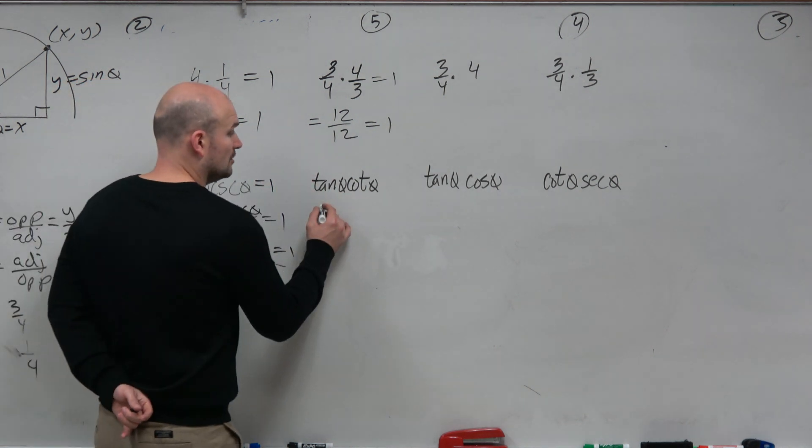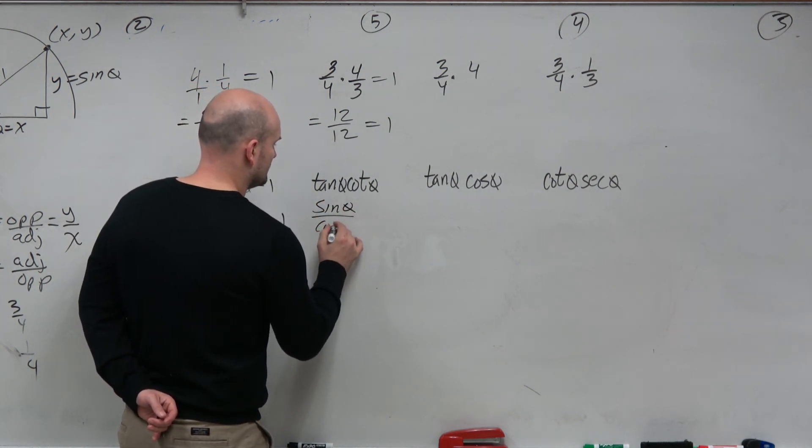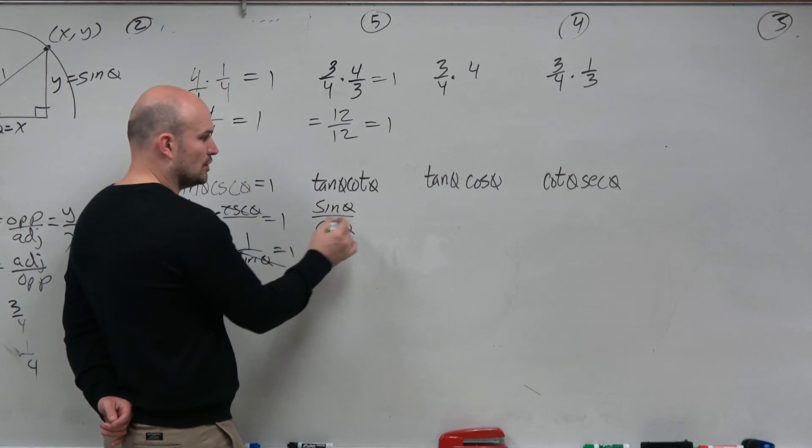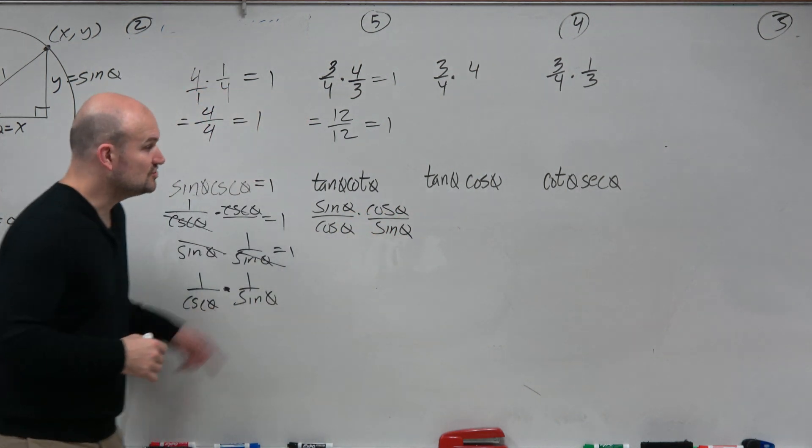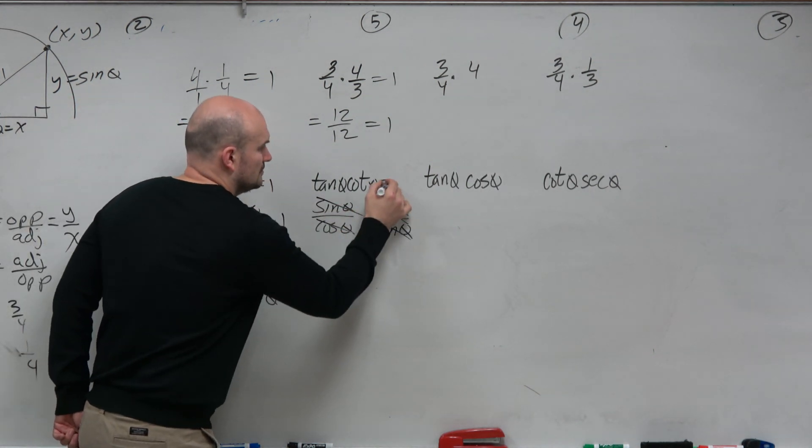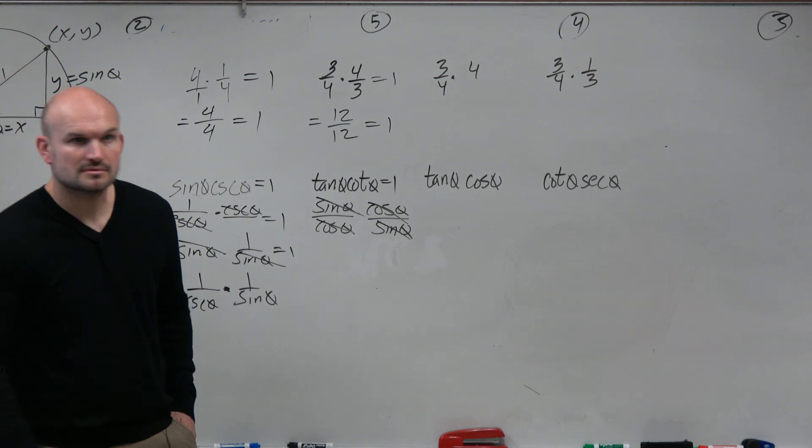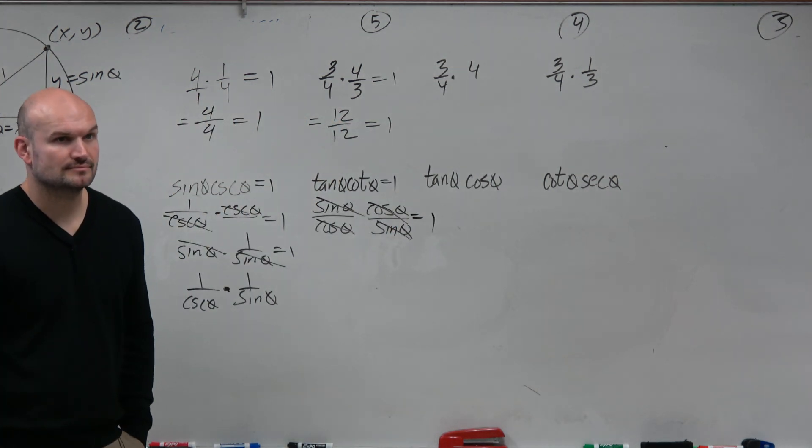I could also, what if your brain immediately went to the quotient identity? Tangent is sine over cosine. Cotangent is cosine of theta over sine of theta. Does it still multiply to give you 1? Right? So you could do your work a little bit differently there as well. OK?